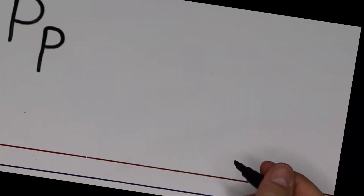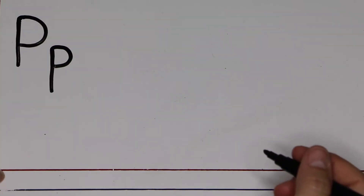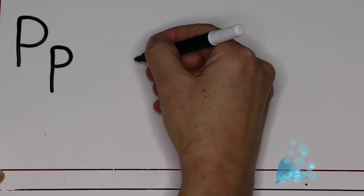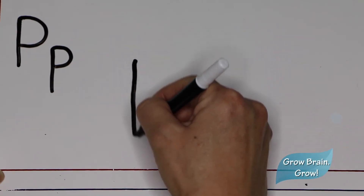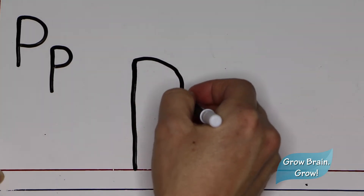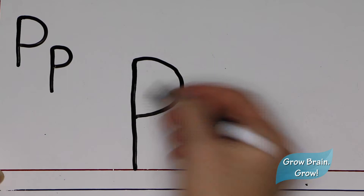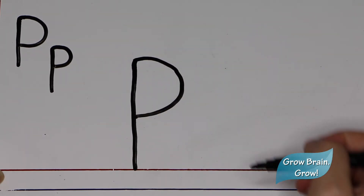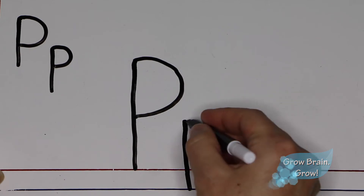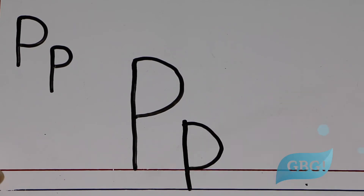Nice job! Let's practice writing uppercase and lowercase P. Begin with uppercase P: start at the top and go straight down, and bump around. Stop there in the center of your line. And lowercase P: start there, go down, down, down, and bump around. Good writing! This is how to write uppercase and lowercase P.